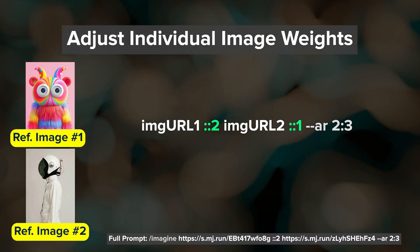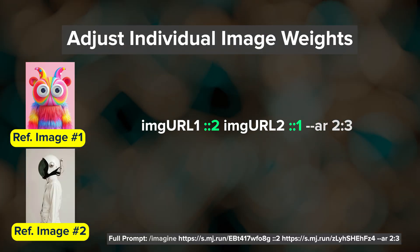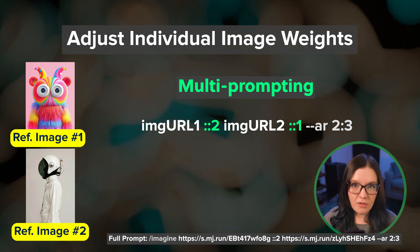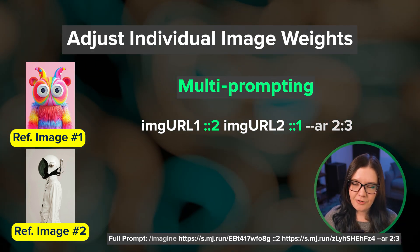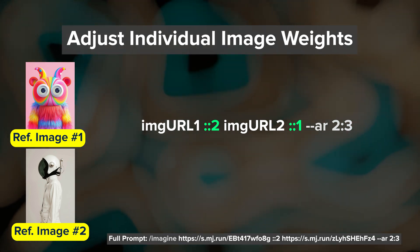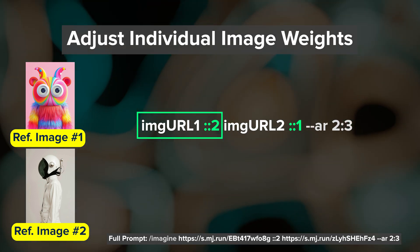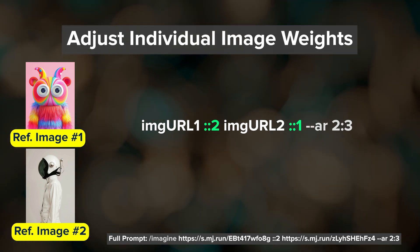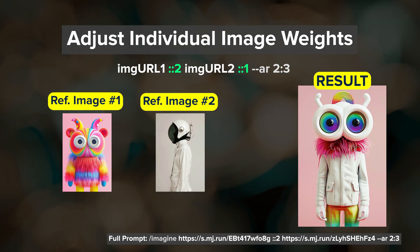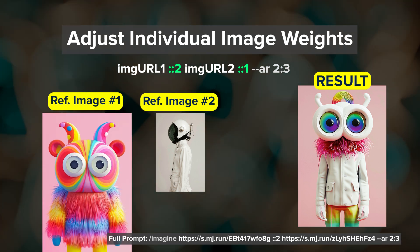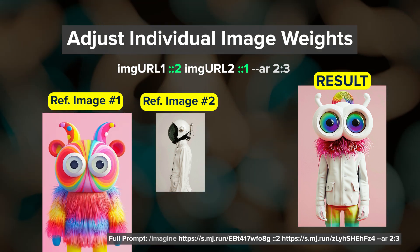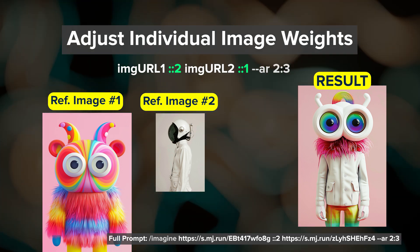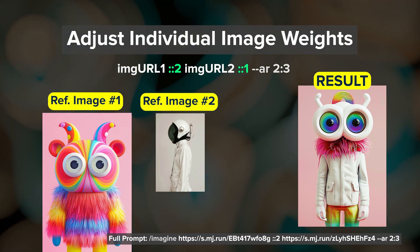To adjust this balance, you can assign relative weights to each image URL by separating them with double colons and a number. This is one example of multi-prompting notation, which is an advanced prompting technique. The double colon tells MidJourney that this part of the prompt should be treated separately from the other parts, and the number is a weight. In this example, we are telling MidJourney that this image is twice as important as the other image, and you can see that effect in the results. Using relative weights like this for images is not available on the web just yet, so you'll need to use Discord for this approach.